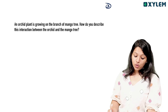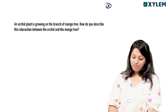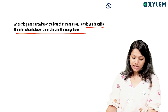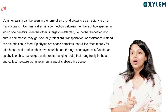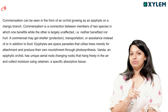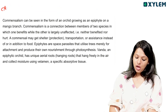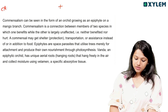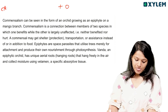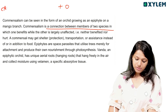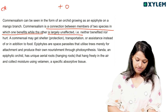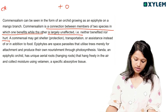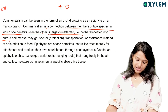An orchid plant is growing on the branch of a mango tree. How do you describe this interaction between the orchid and the mango tree? This is called commensalism — a positive and neutral interaction. It is a connection between members of two species in which one benefits while the other is largely unaffected, neither benefited nor hurt.